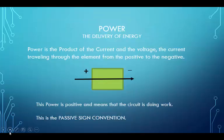Power, which includes the delivery of energy, is the product of the current and the voltage, and the current traveling through the element travels from the positive to the negative side. This power is positive and means that the circuit is doing work. This is the passive sign convention.